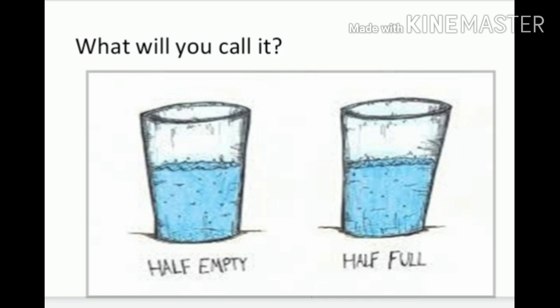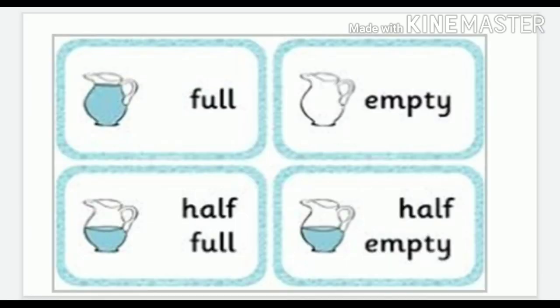Aap dekho picture mein, aapke paas do glass hain. Dono glass mein aadha aadha paani bhara hua hai. Aap use kya bologe? Koi bachcha kahega yeh half empty hai, yaani aadha khaali hai. To koi kahega yeh aadha bhara hua hai. Both children are correct because it says half empty and also half full. Now you can see four mugs are there in the picture — ek full hai, ek half hai, ek empty hai, usme kuch paani hi nahin hai, aur ek half empty hai, yaani aadha khaali hai.